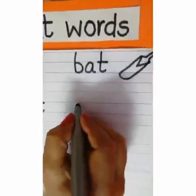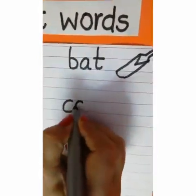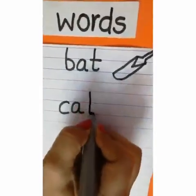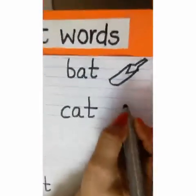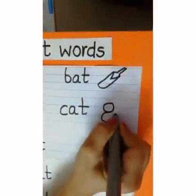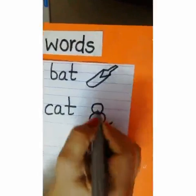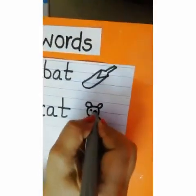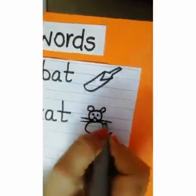Next we have cat. A, T — cat. The picture for the cat goes this way: two circles with a tail, two ears, two eyes, one nose and mustache.